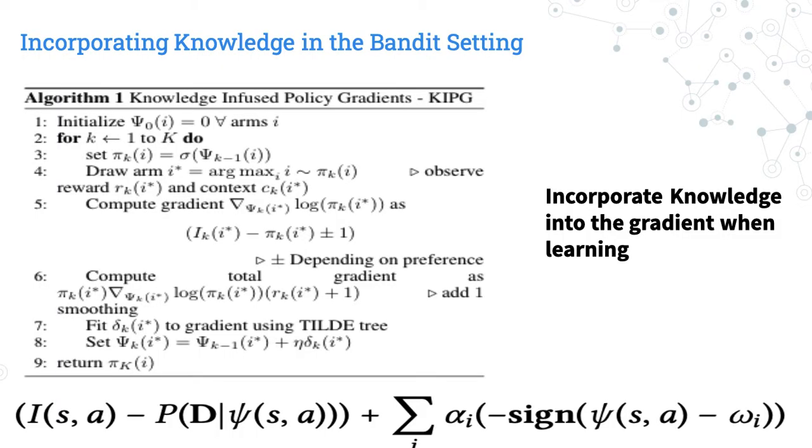Here is the algorithm. It's policy gradients for bandits. We initialize a policy, draw an arm based on that policy, and then compute the gradient. For the gradient, we make a knowledge-based adjustment. How this knowledge-based adjustment is derived is using what you see at the bottom. It comes from first principles of Bayesian posterior formulation. For more details, you can look at the paper or we can talk about it afterwards. Here, the exploration is not yet introduced. How the knowledge is incorporated into the policy gradient setup is introduced.